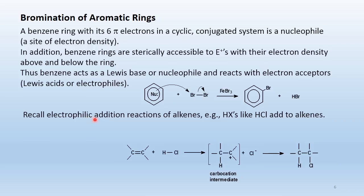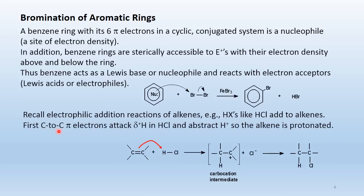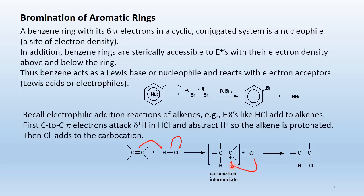Recall electrophilic addition reactions of alkenes. For example, hydrogen halides like HCl add to alkenes: the carbon-to-carbon pi electrons attack the delta-plus hydrogen in HCl, abstracting the hydrogen ion so the alkene becomes protonated. Chloride leaves with the pair of electrons forming a chloride anion, and then chloride adds to the carbocation.